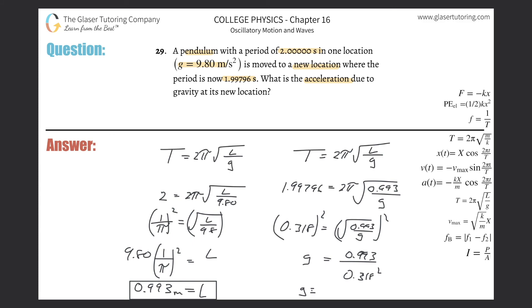So 9.82. So here we get a value of about 9.82. And this would be in meters per second squared. That would be the new gravity. And there's the answer.